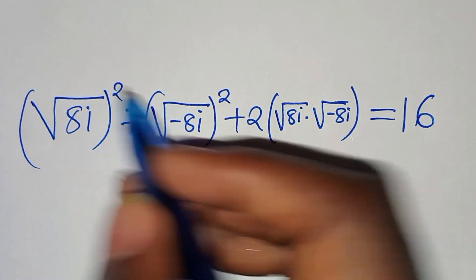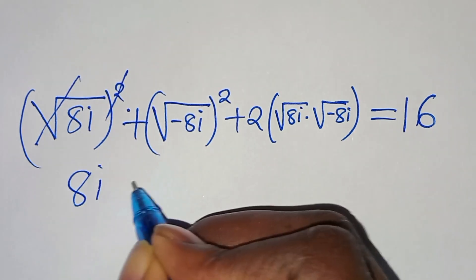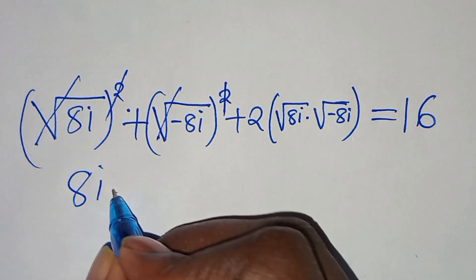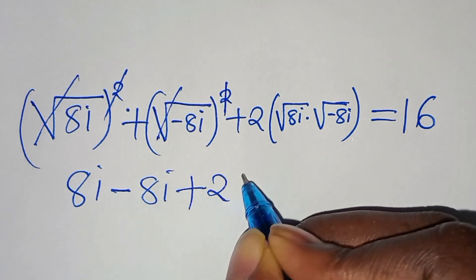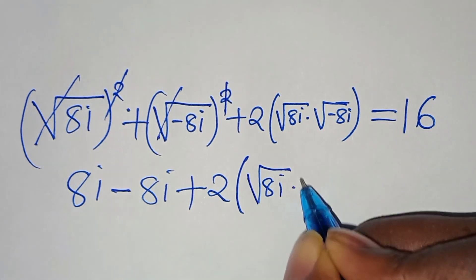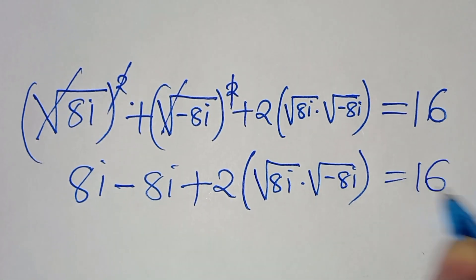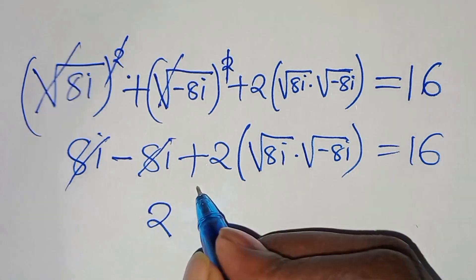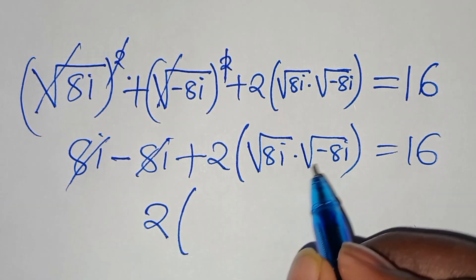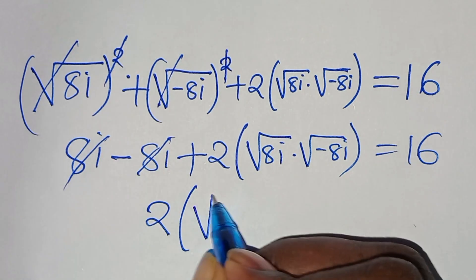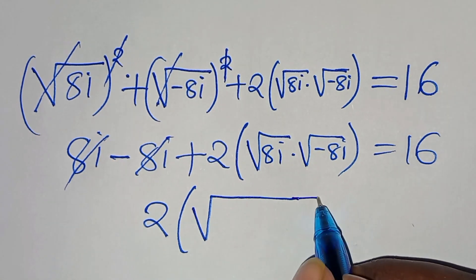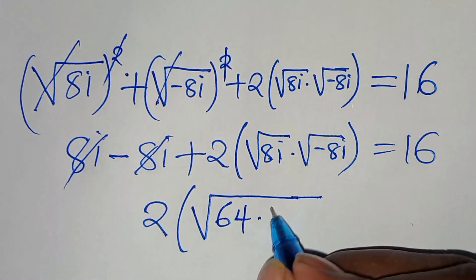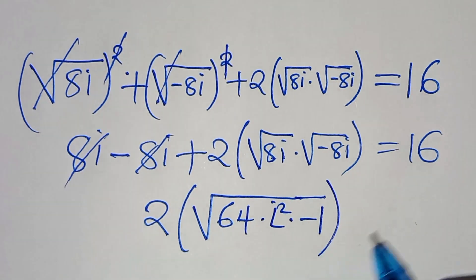The square root of 8i squared eliminates the square root sign, giving 8i. The square root of minus 8i squared gives minus 8i. So we have 8i minus 8i, which simplifies to 0, plus 2 times the square root of 8i times the square root of minus 8i. We can combine into a single square root: the square root of 8 times 8 times i times i, which is the square root of 64 times i squared times minus 1, equal to 16.